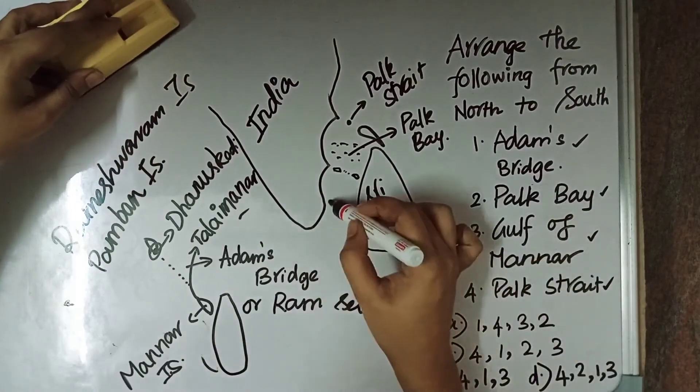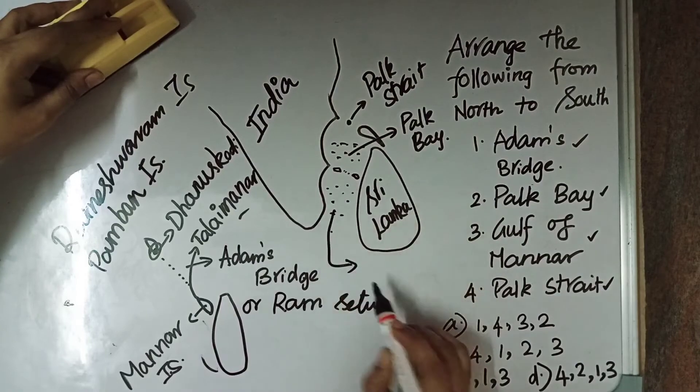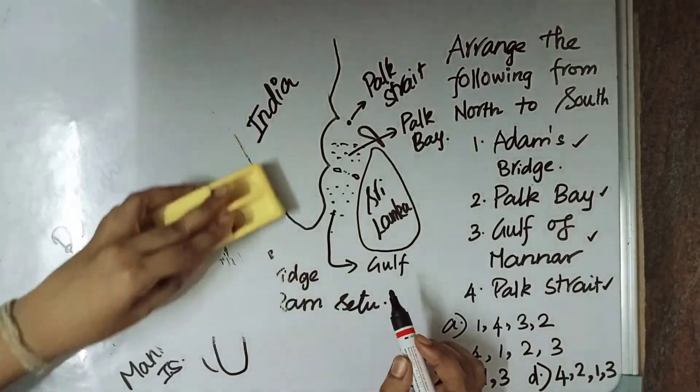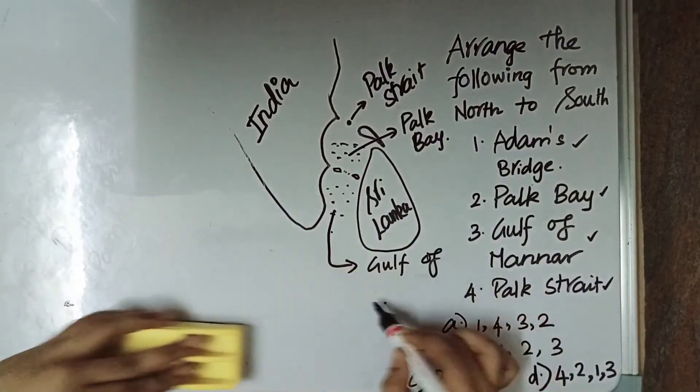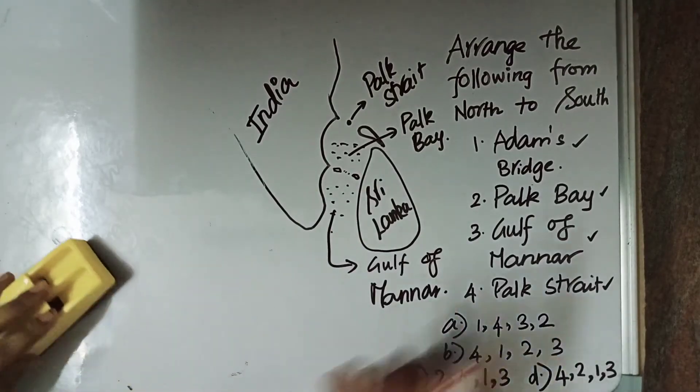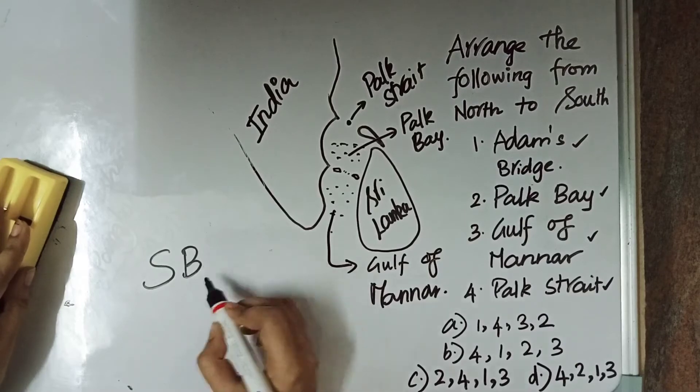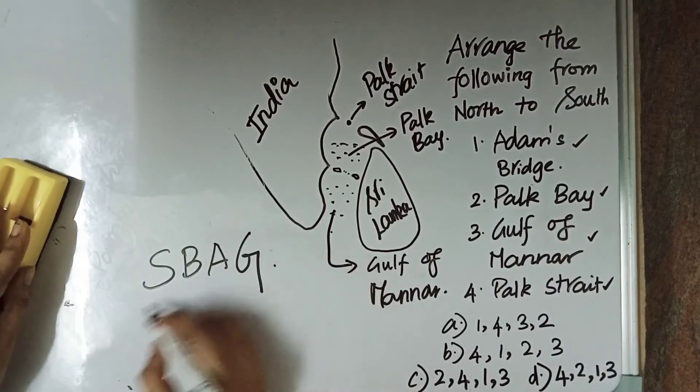In between Danushkodi tip and Talai Manar region of Sri Lanka we have Adams Bridge which is next to Park Bay. And after this region this water body is called Gulf of Mannar. So, now we know the order. First we have a strait. Then we have bay. Then we have Adams Bridge. Then we have Gulf of Mannar.